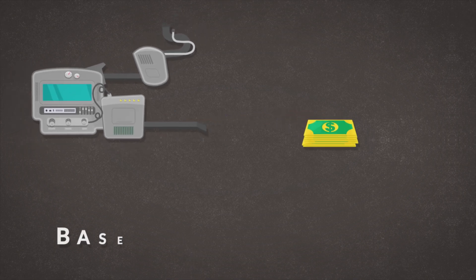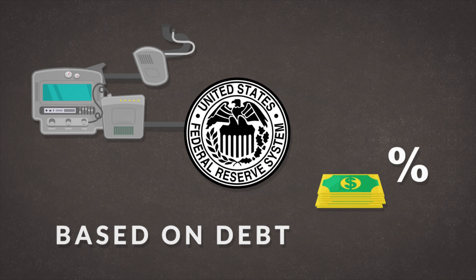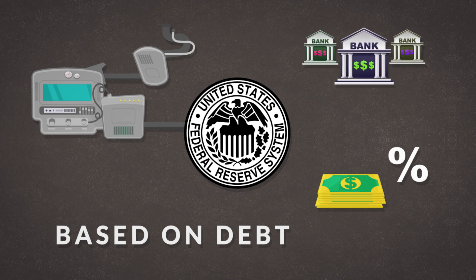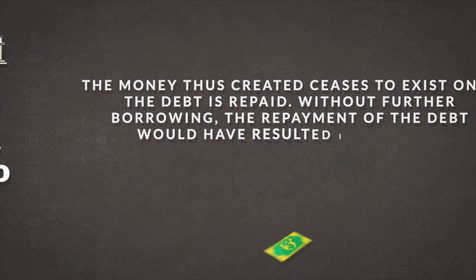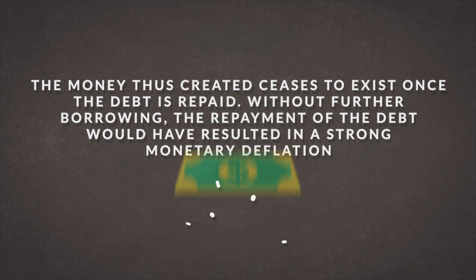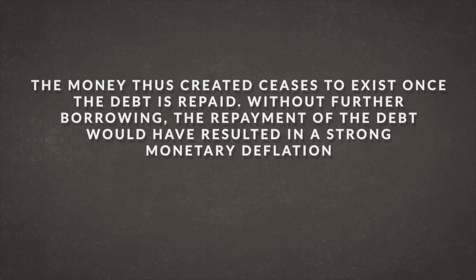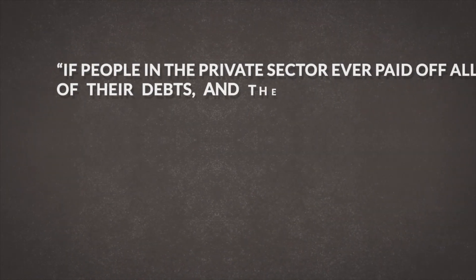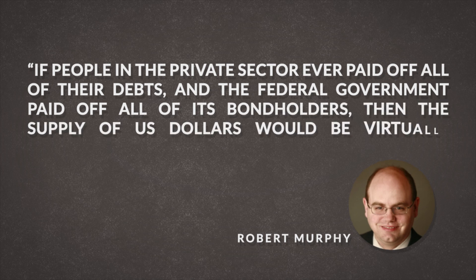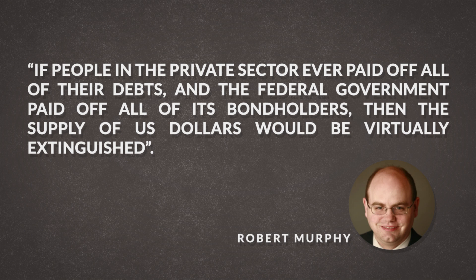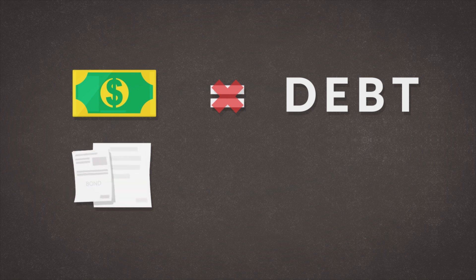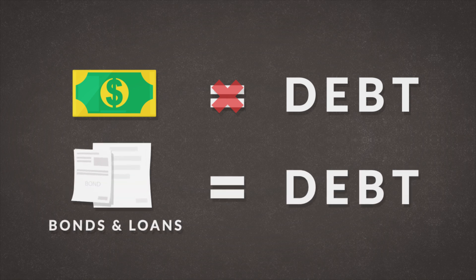Throughout this entire process, the newly created money is based on debt. When the Fed increases the monetary base, the public debt also increases. And granting a loan by any of the commercial banks necessitates an act of fiduciary media creation. The money thus created ceases to exist once the debt is repaid. Without further borrowing, the repayment of the debt would have resulted in a strong monetary deflation. Economics professor Robert Murphy once said: 'If people in the private sector ever paid off all of their debts, and the federal government paid off all of its bondholders, then the supply of U.S. dollars would be virtually extinguished.' In spite of this fact, money is not the same as debt — the bonds and loans are. Perceiving money as debt is a rather popular misconception.